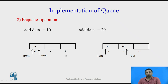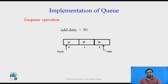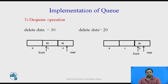Now if you want to add 20 to the queue, the front stays at the same position but the rear is incremented by plus 1. Then when you add 30, the front is kept at the same position and rear is incremented by plus 1 again. So front is pointing towards a[0] and rear is pointing towards a[2]. Now the queue is full.